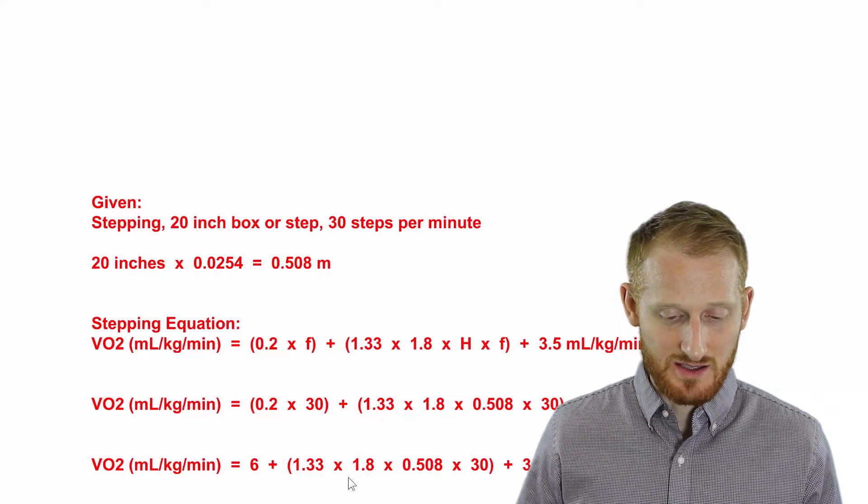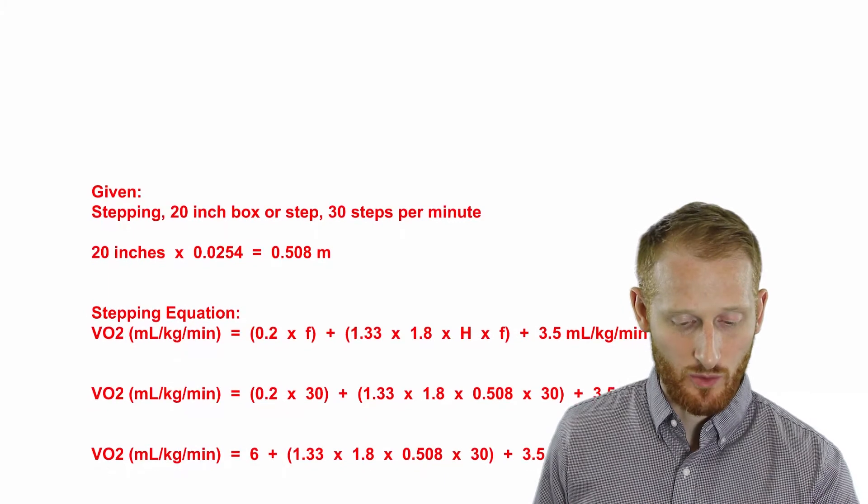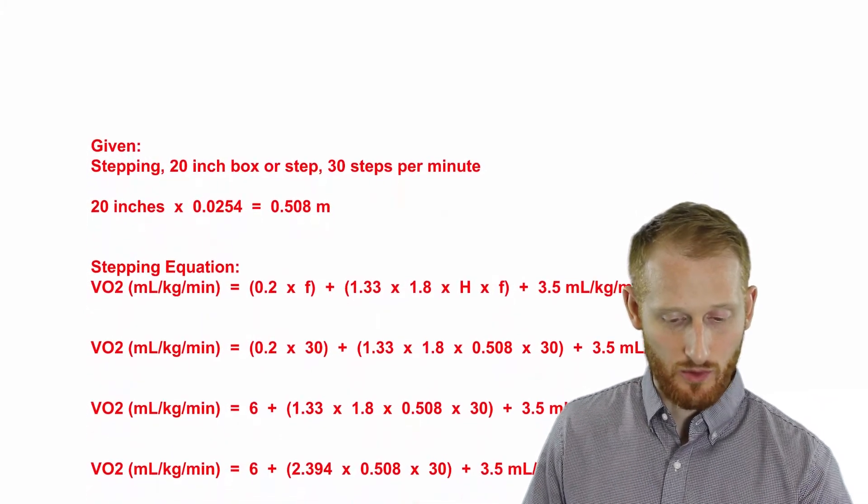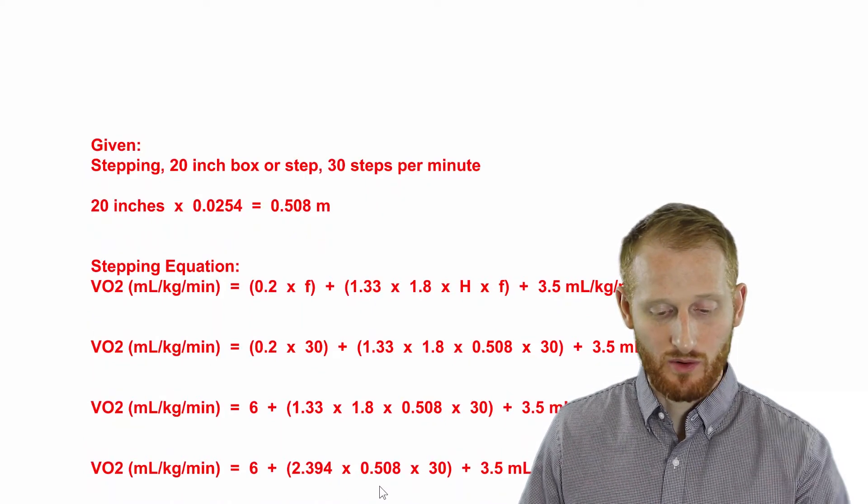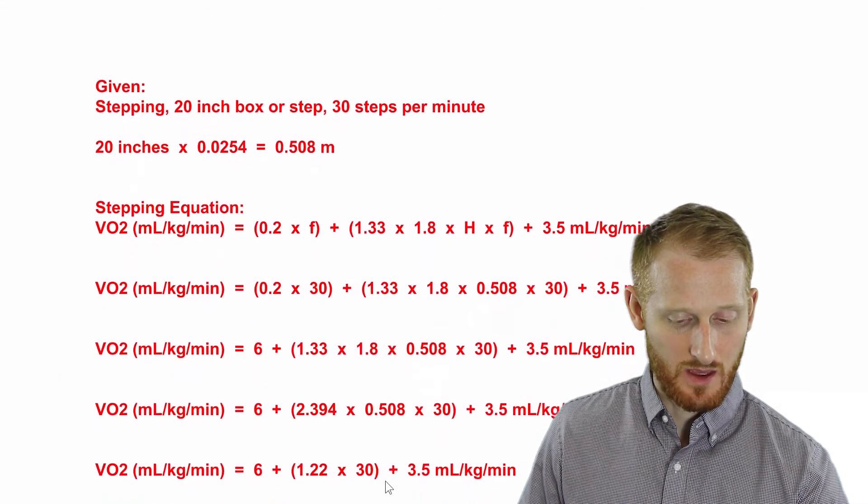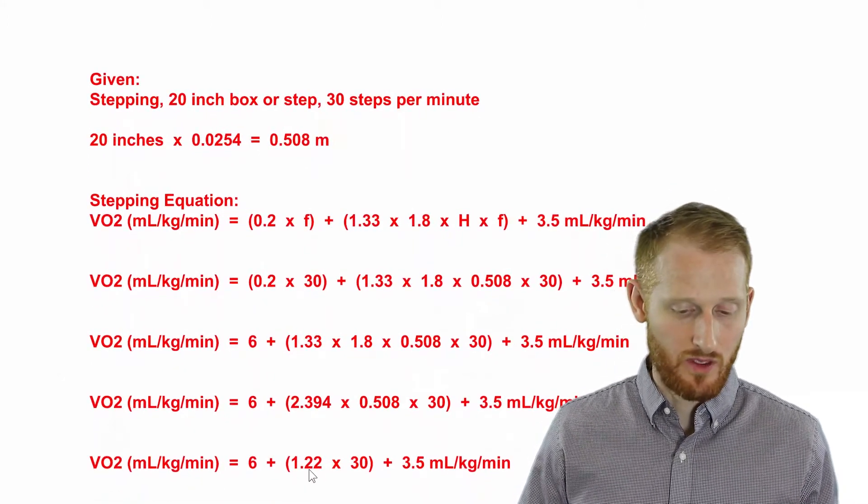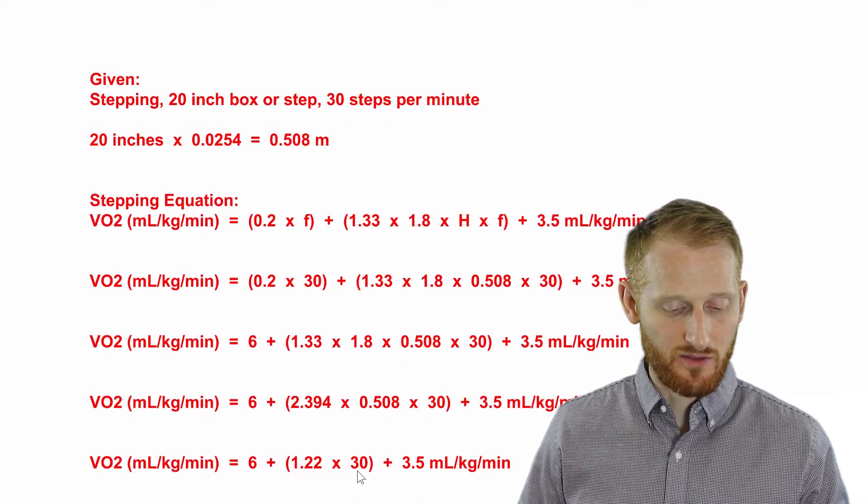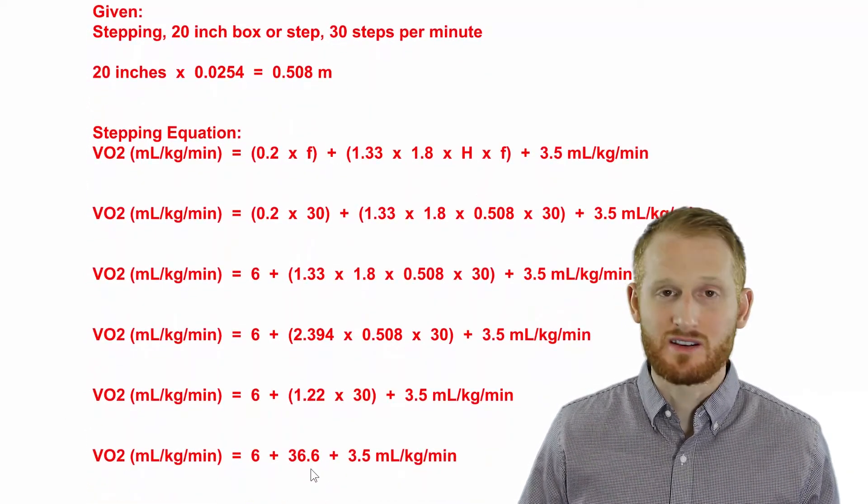The second set of parentheses here, I'm going to do that step by step. So 1.33 times 1.8 gives us 2.394. Now 2.394 times the 0.508, which is the step height, gives us 1.22. And then one more time, 1.22 times 30 for the step frequency is going to give us 36.6.